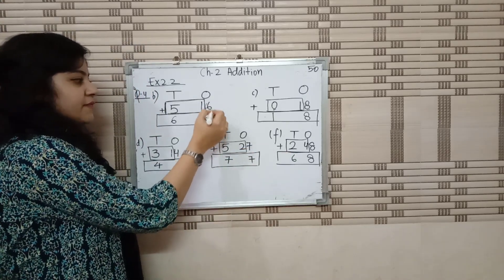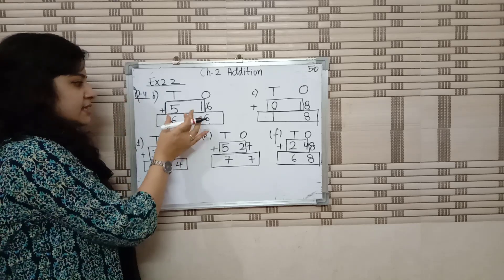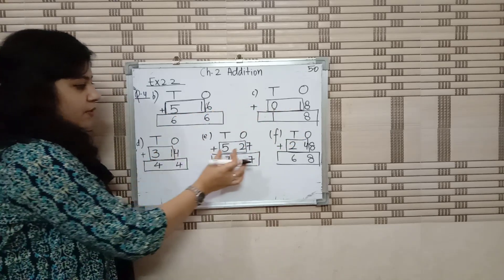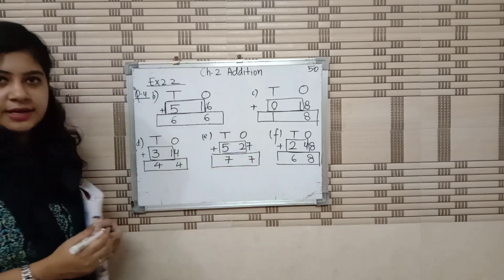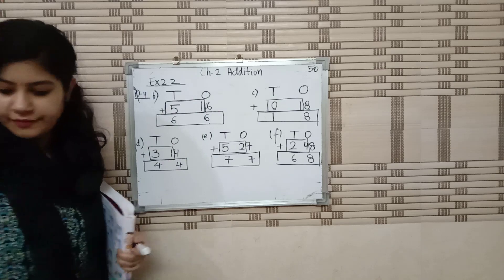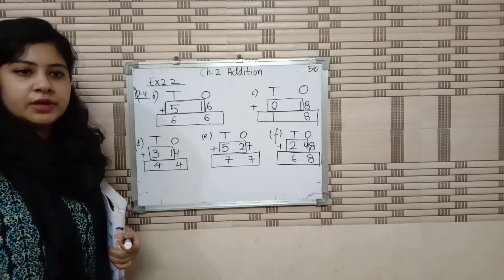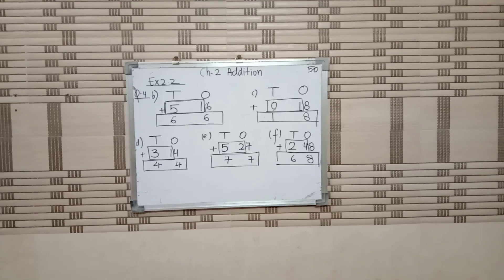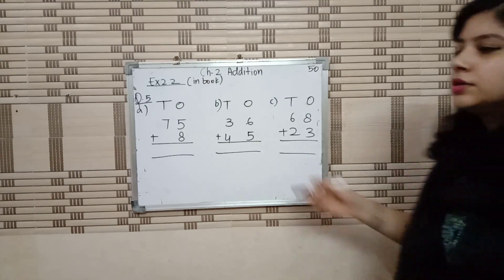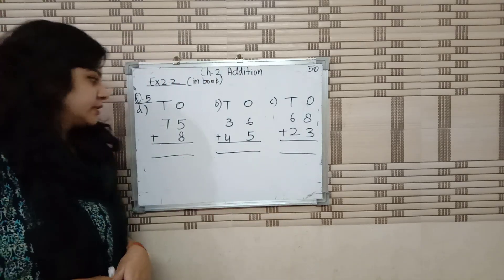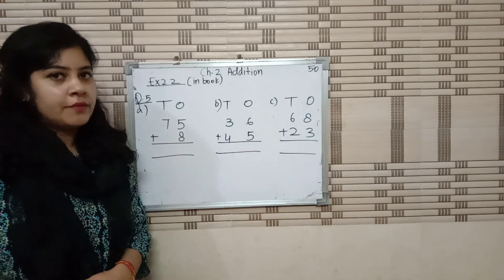Once the 1's place is given, write the 1's place as it is and add the 10's places. We have all the questions in 10's places added here. It's Exercise 2.2, question number 4, page number 50. Now the next question — question number 5: Add the following. It's 2-digit addition with carryover. We start from 1's place.